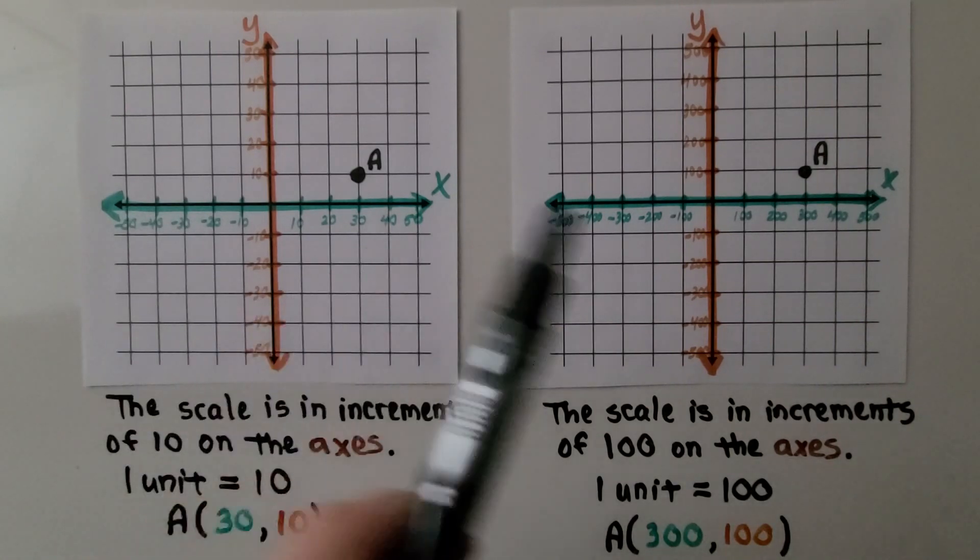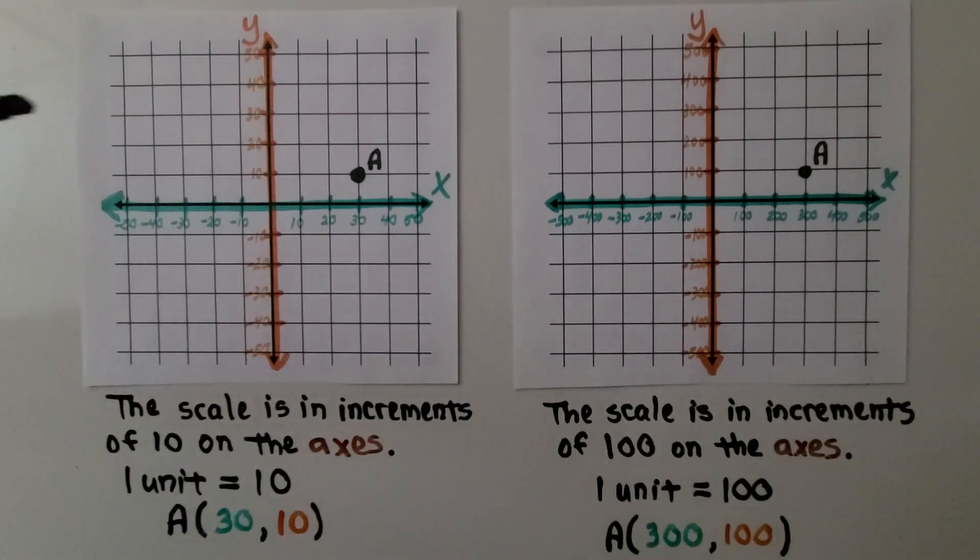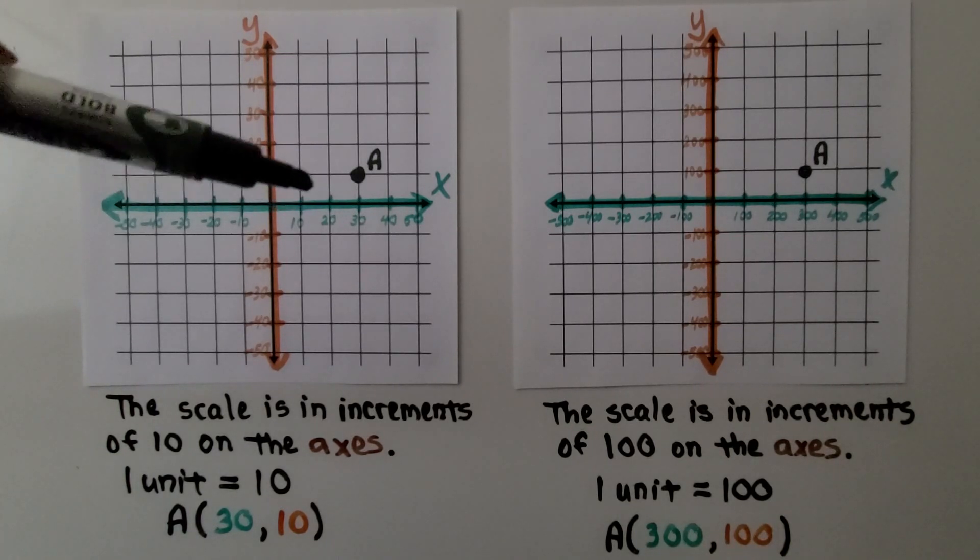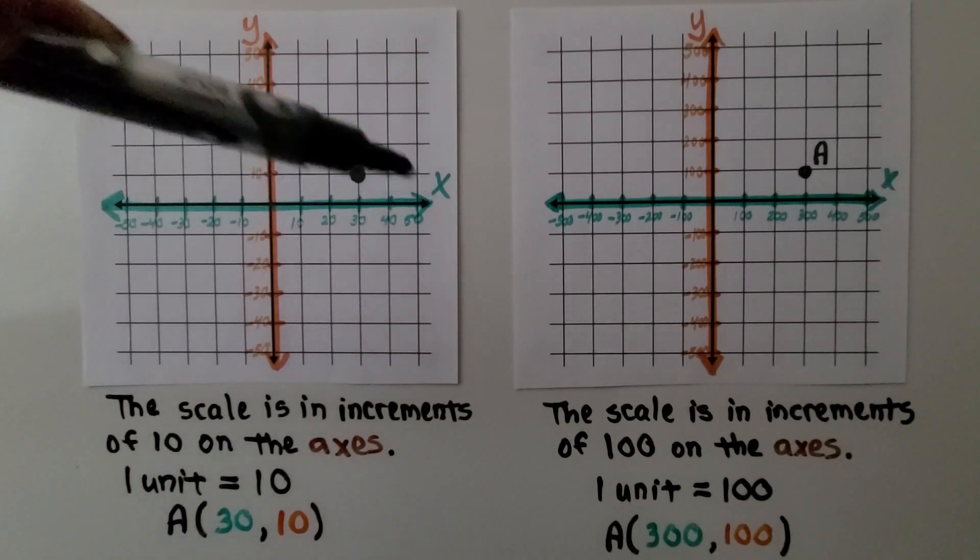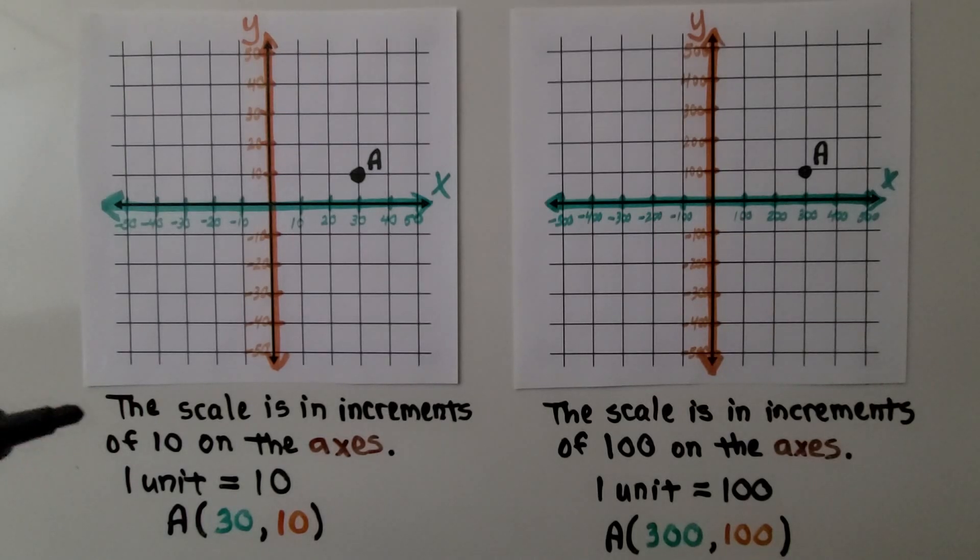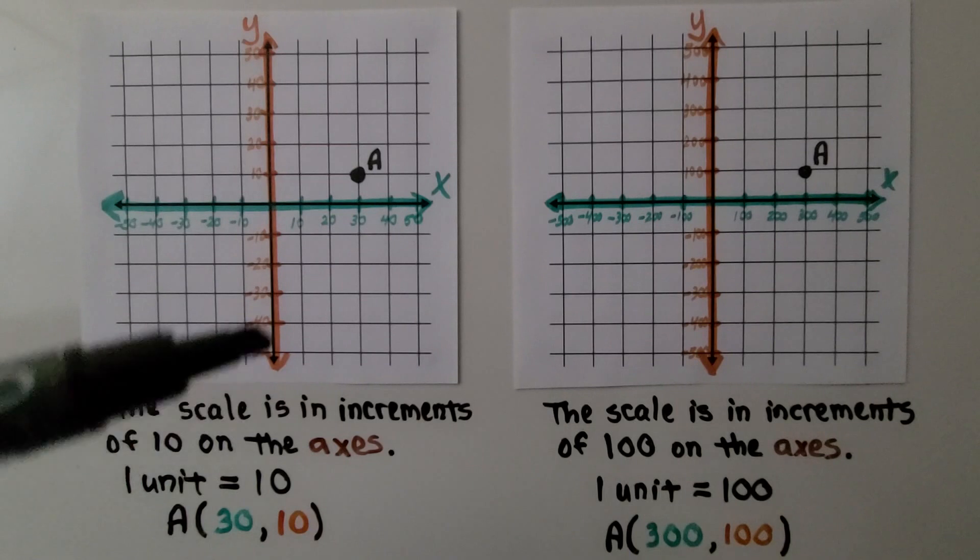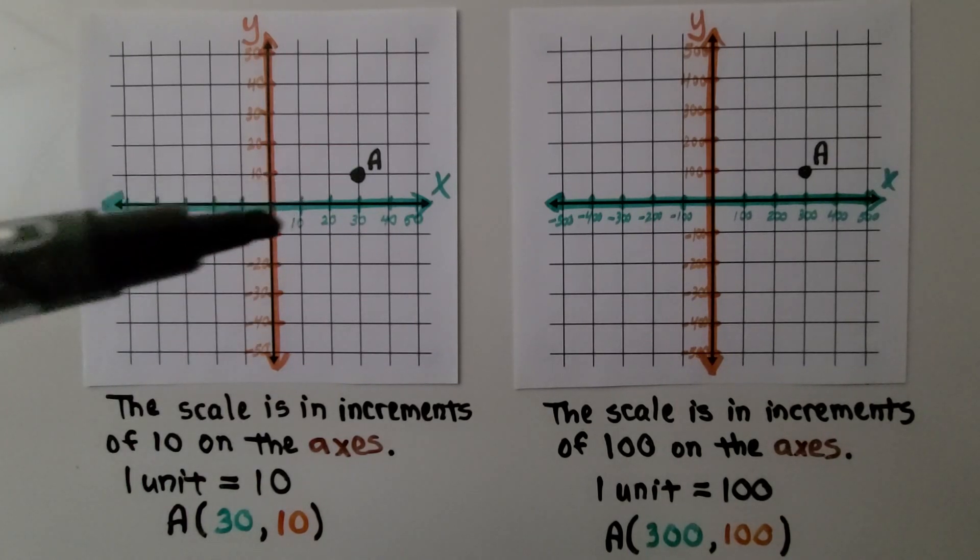Here we have two coordinate planes. And if you look at the scale on this one, it's going from zero at the origin to 10, 20, 30, 40, 50. The scale is in increments of 10 on the axes. One unit, one square, is equal to 10.